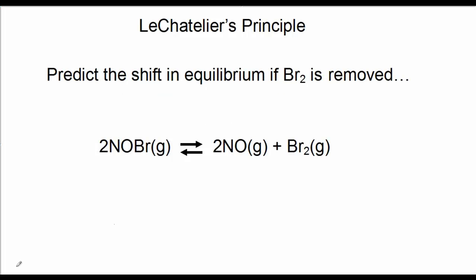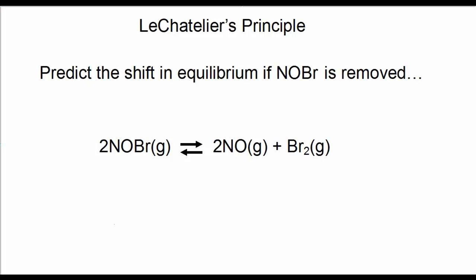Now predict the shift if Br2 (bromine) is removed. Taking some bromine out, the reaction shifts to the right. And finally, predict what would happen if NOBr is removed. NOBr is a reactant, and if we remove some of that, the equilibrium would temporarily shift to the left.